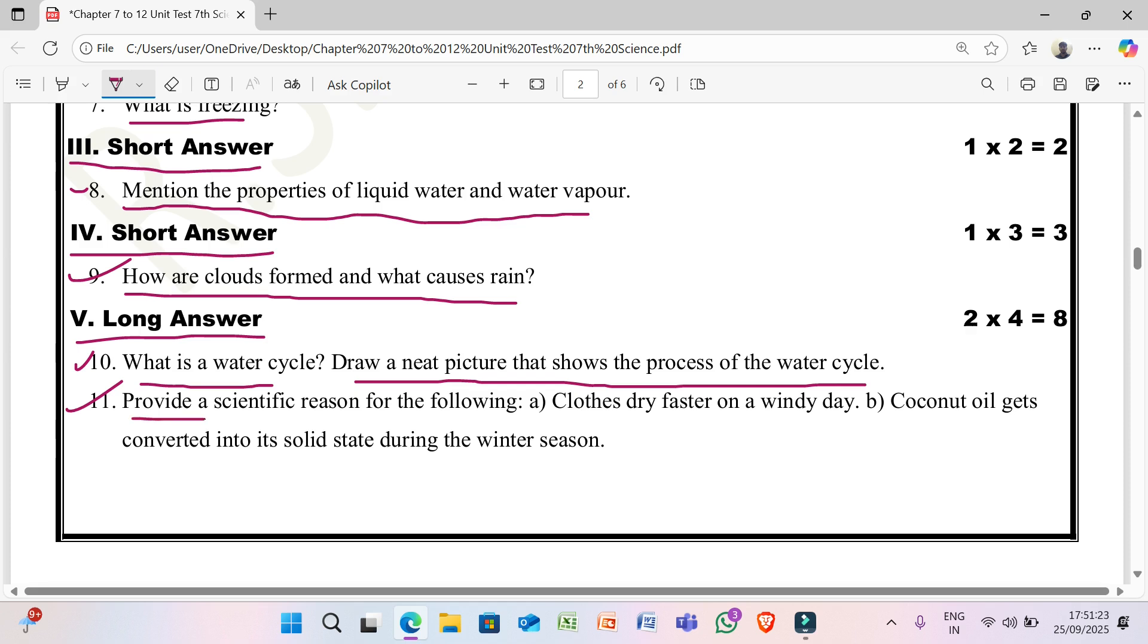Eleventh one: provide a scientific reason for the following. First, A: clothes dry faster on a windy day. B) Coconut oil gets converted into its solid state during the winter season.